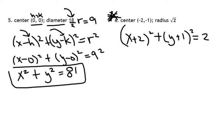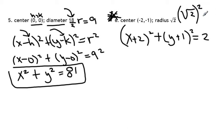We should have gotten x plus two squared plus y plus one squared, and that equals two. Because remember, you're going to square the radius, and the square root of a number squared undoes the square root. So this becomes a positive two.